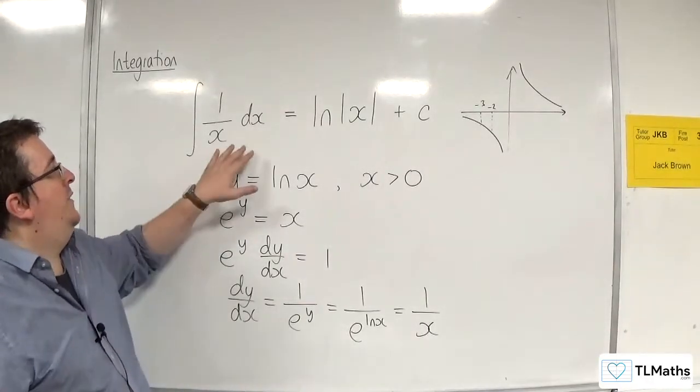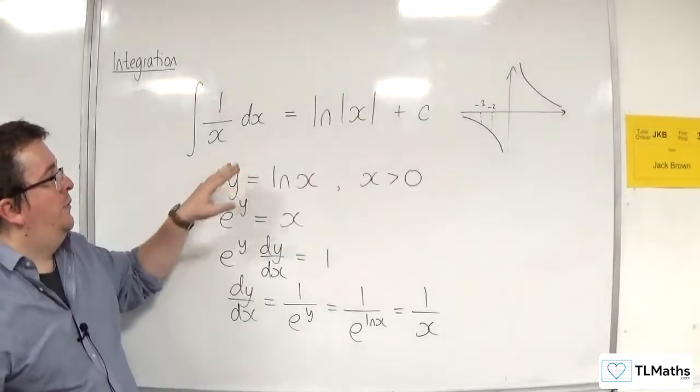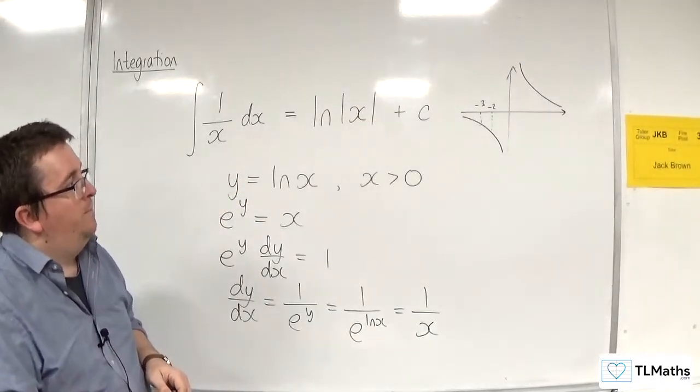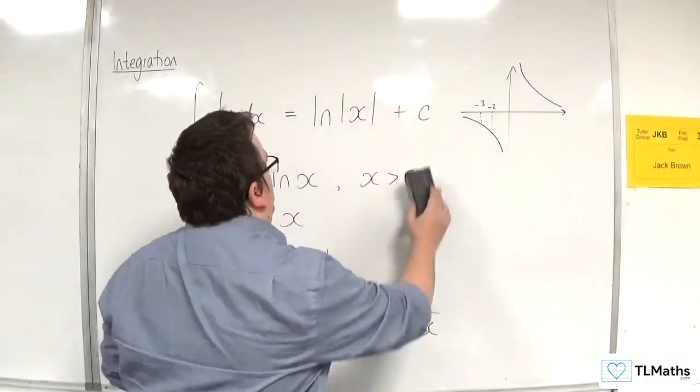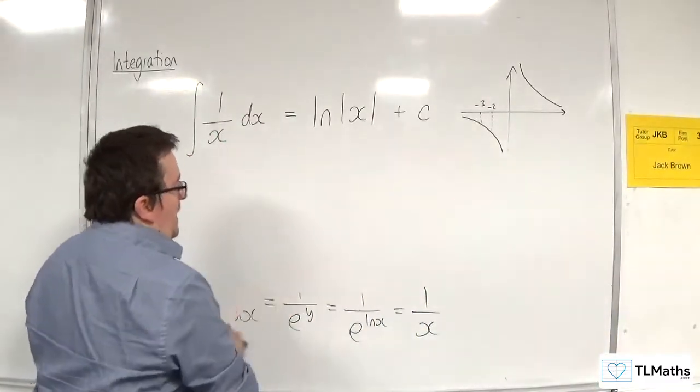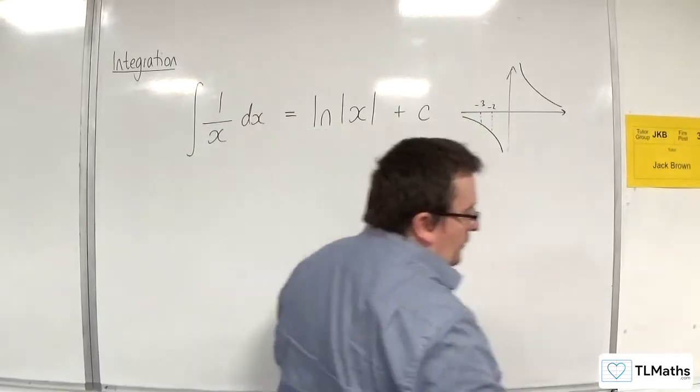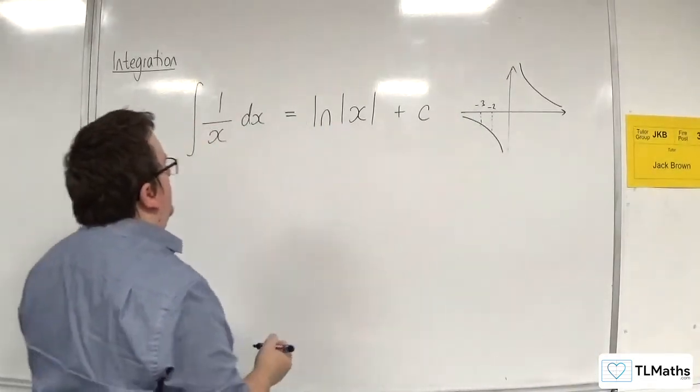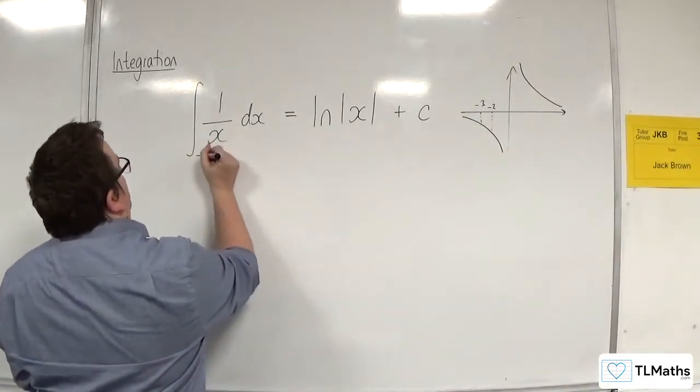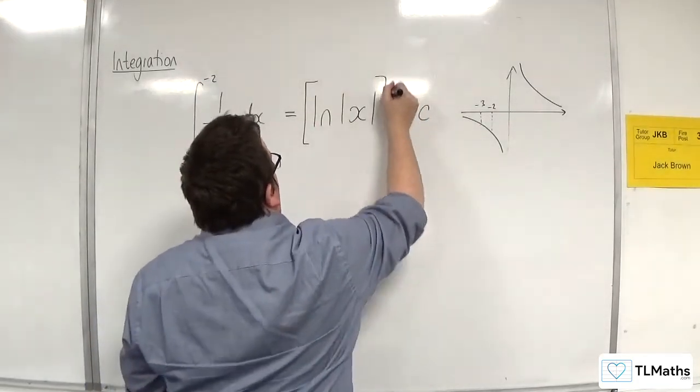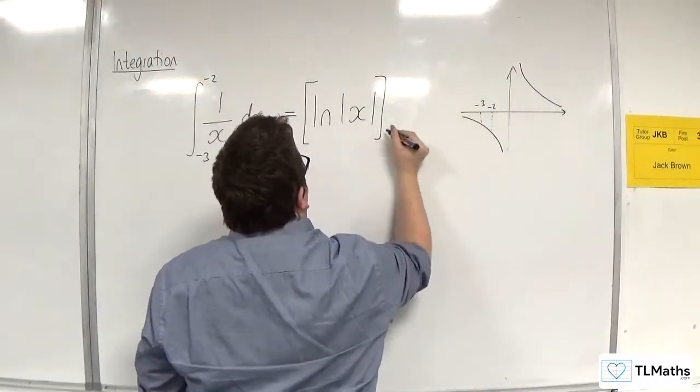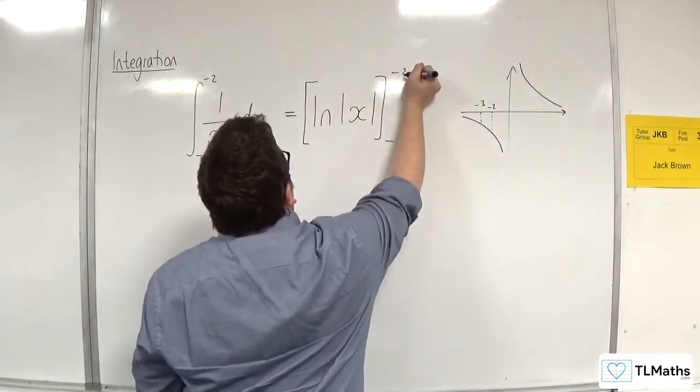So that is how we deal with 1 over x and how we integrate it. So what you see is that when you integrate it between that minus 3 and minus 2, for example. So let's go from minus 3 to minus 2. So we need to put it in a square bracket. We can lose the plus c. Minus 3 to minus 2.